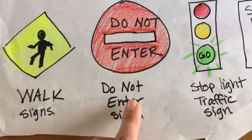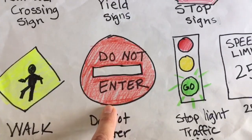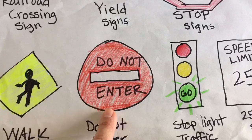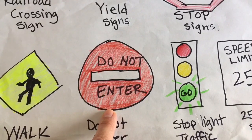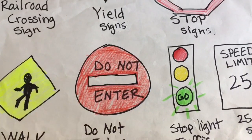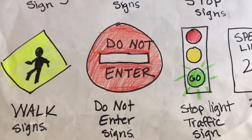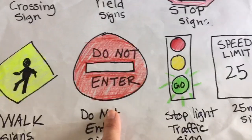Do not enter sign — this means that usually the street is closed to traffic, so do not enter. Traffic would usually include bicycles.